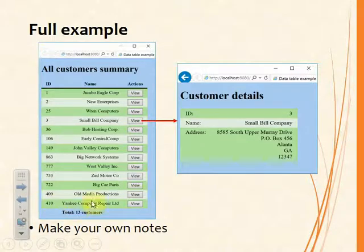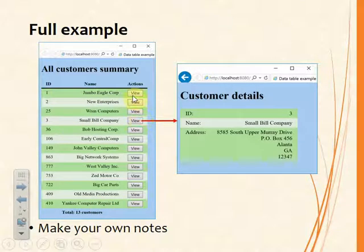The full example, available to download from Blackboard, starts by displaying the summary of all the customers — this is where the collection of customer objects comes in. There is a button for each row, a command button that allows us, when clicked, to view the details of that specific customer. That means we need a mechanism whereby the command button can extract the specific object and relay it to the other view.